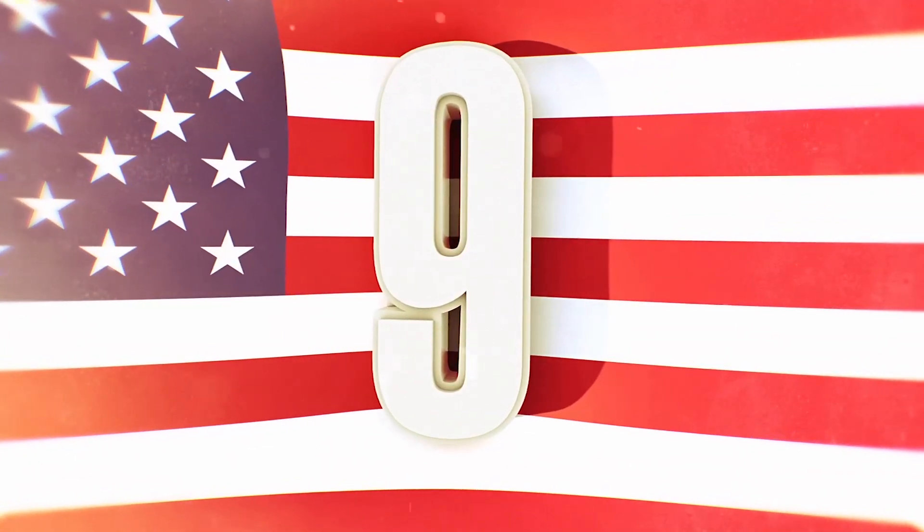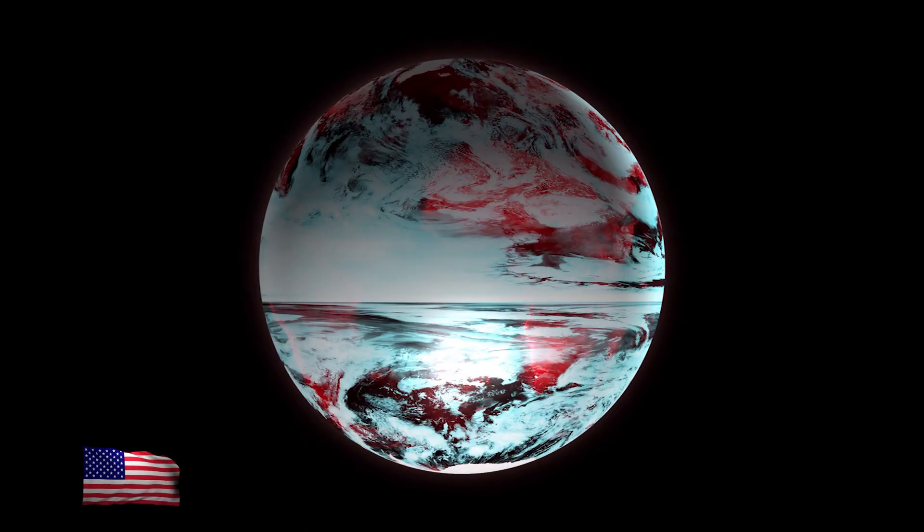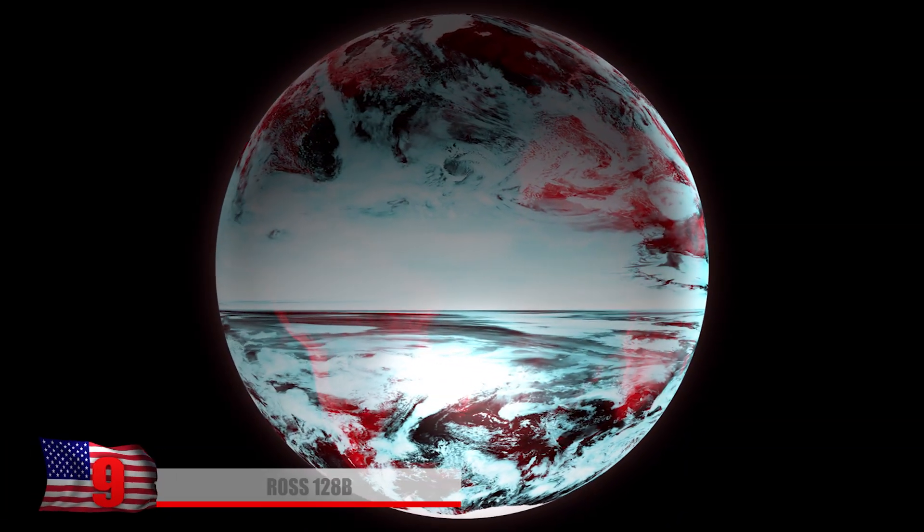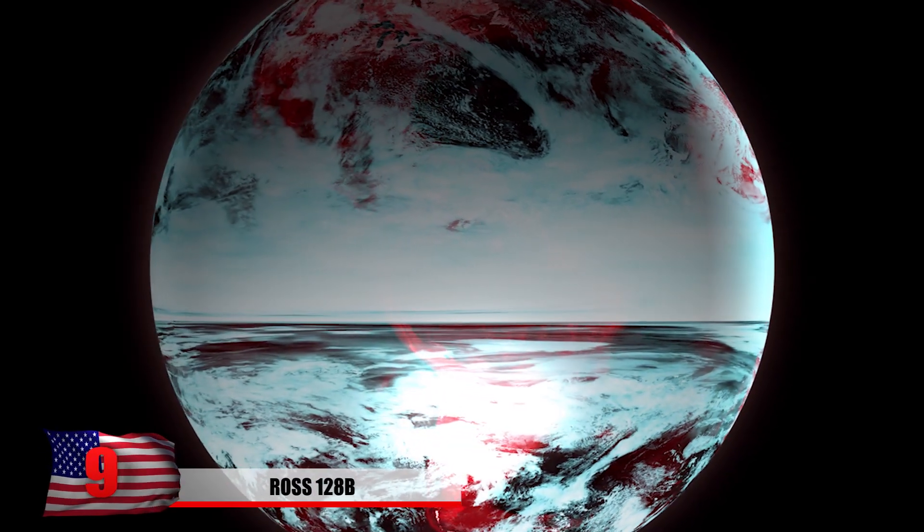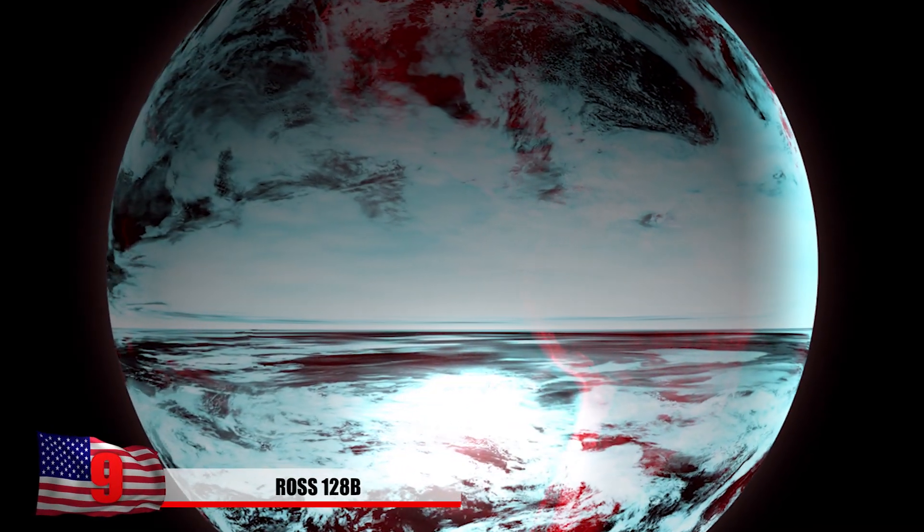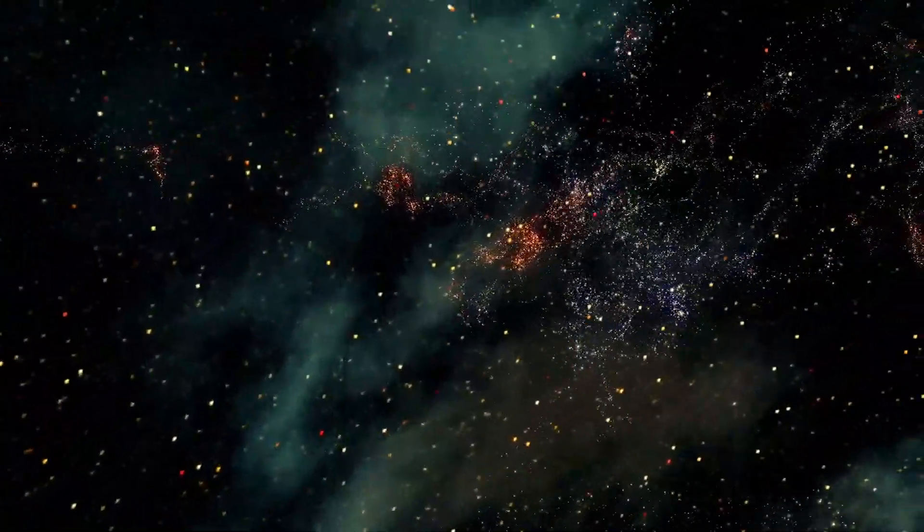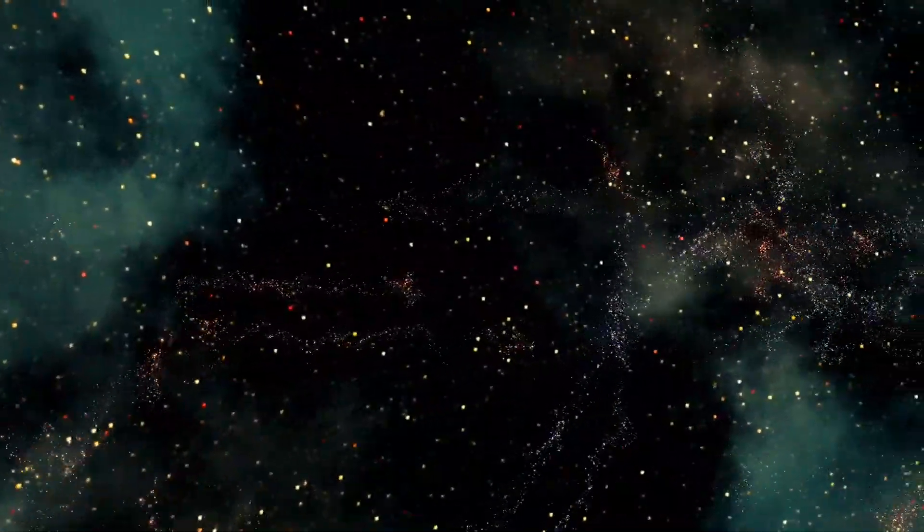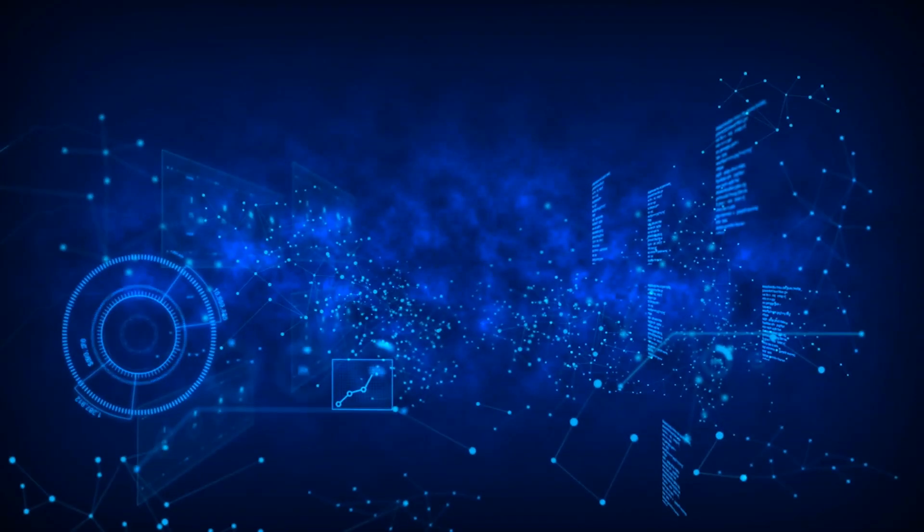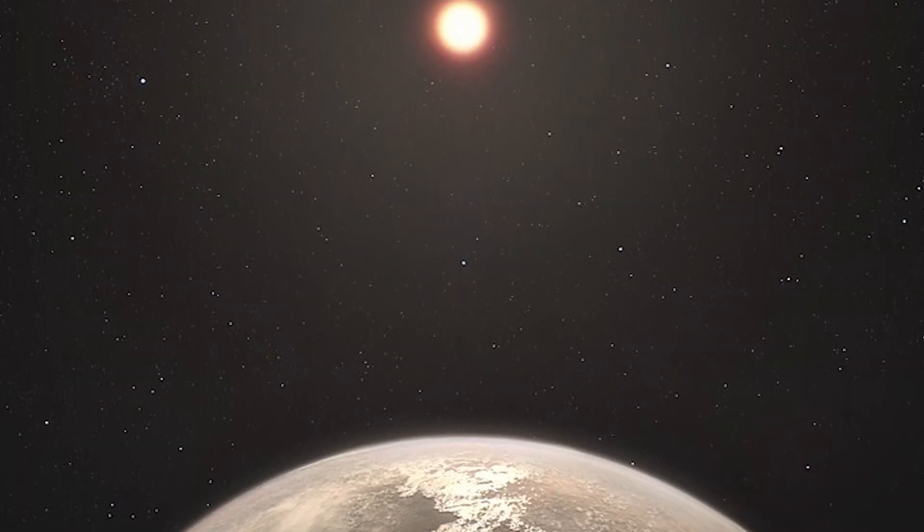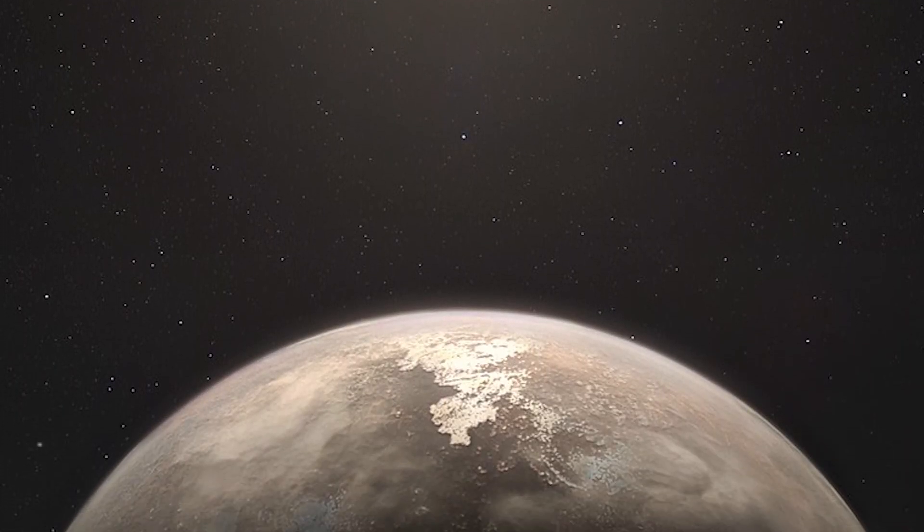Number 9, Ross 128b. Our next place where aliens might be hiding is a planet known as Ross 128b, which is about the size of Earth. It rotates around a red dwarf star known as Ross 128, which is about 11 light years away from us. It was discovered using radial velocity data collected by the European Southern Observatory, which has a pretty advanced spectrograph. The surface of Ross 128b is thought to be primarily rocky and receives an estimated 38% more sunlight than our planet.